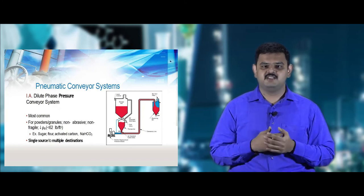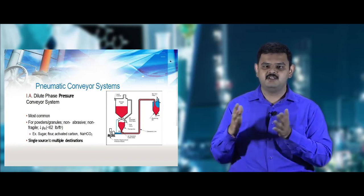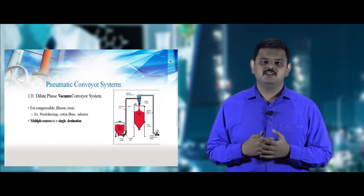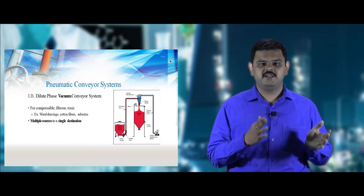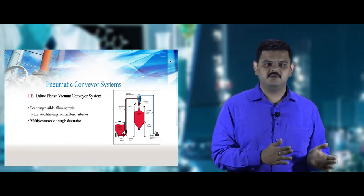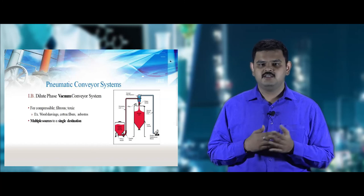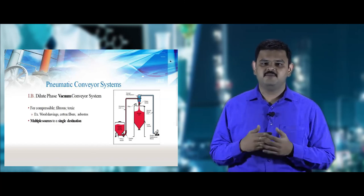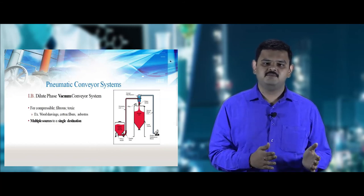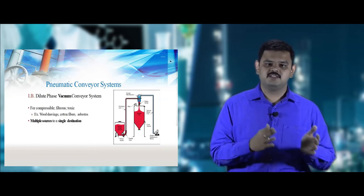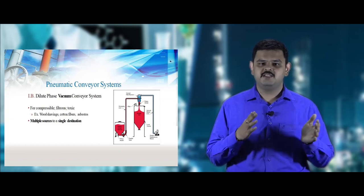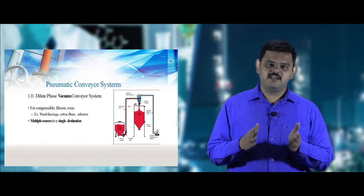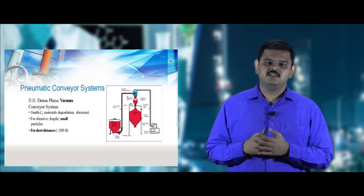In dilute phase vacuum pneumatic conveyors, the vacuum force pulls materials of a compressible, fibrous, and toxic nature such as wood shavings and cotton fibers. These are transferred from multiple sources to a single destination but only over very short distances.